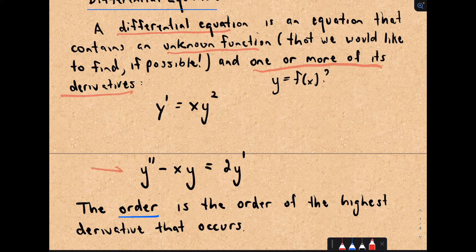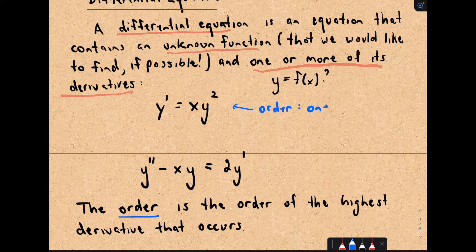In the second equation, I've got the second derivative of y minus x times y equals two times y prime. You'll often talk about the order, and the order is the order of the highest derivative that occurs. Here the highest derivative is a first derivative, so this has order one — these are often called first order differential equations. In the second one, I've got a first derivative and also a second derivative, so this would be order two, or a second order differential equation.